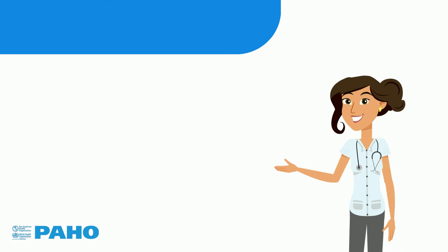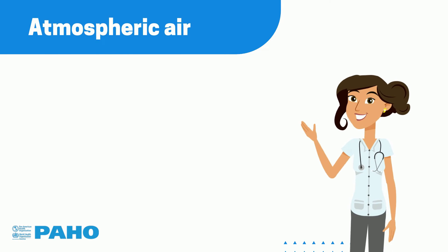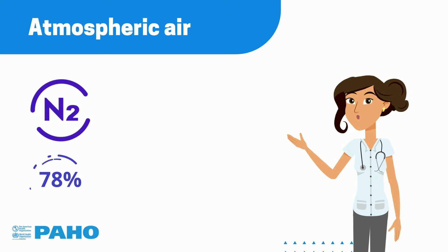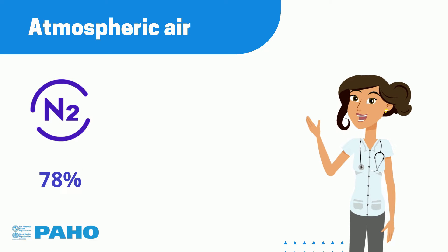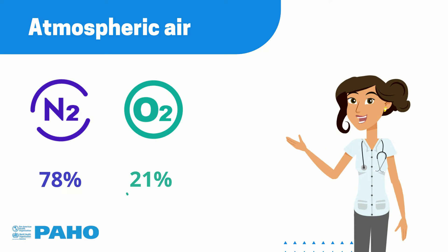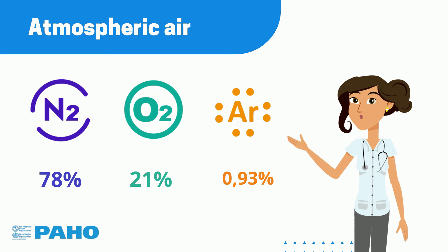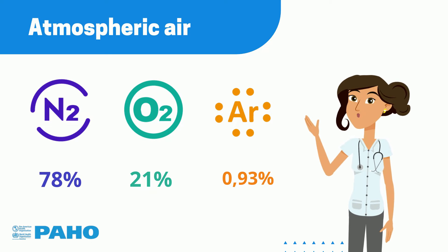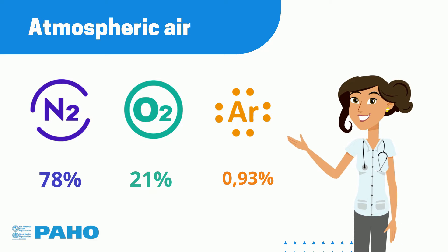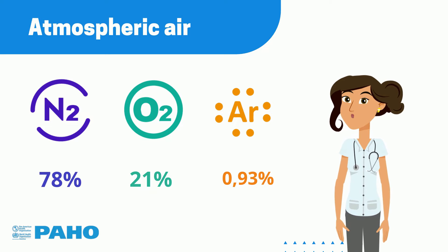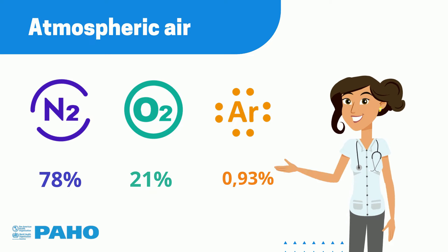Atmospheric air is 78% nitrogen, 21% oxygen, and 0.93% argon, with the remainder consisting of other gases such as carbon monoxide and carbon dioxide.